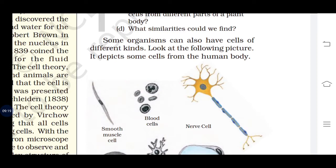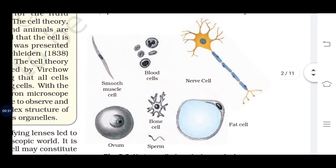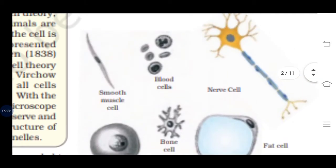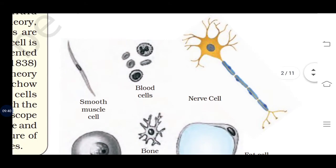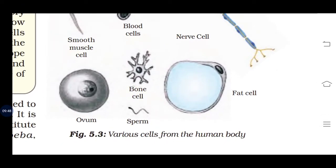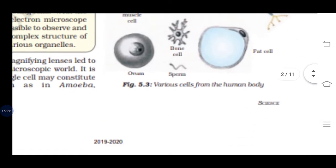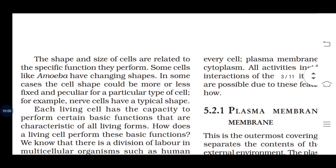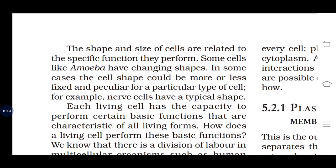Some organisms can also have cells of different kinds. Look at the following picture depicting some cells from the human body. You will see smooth muscle cells, blood cells, nerve cells — which have the most distinct structure — as well as ovum, bone cells, sperm, and fat cells. The shape and size of cells are related to the specific function they perform. Some cells, like Amoeba, have constantly changing shapes, while in other cases the cell shape could be more or less fixed, for example, nerve cells have a typical shape.